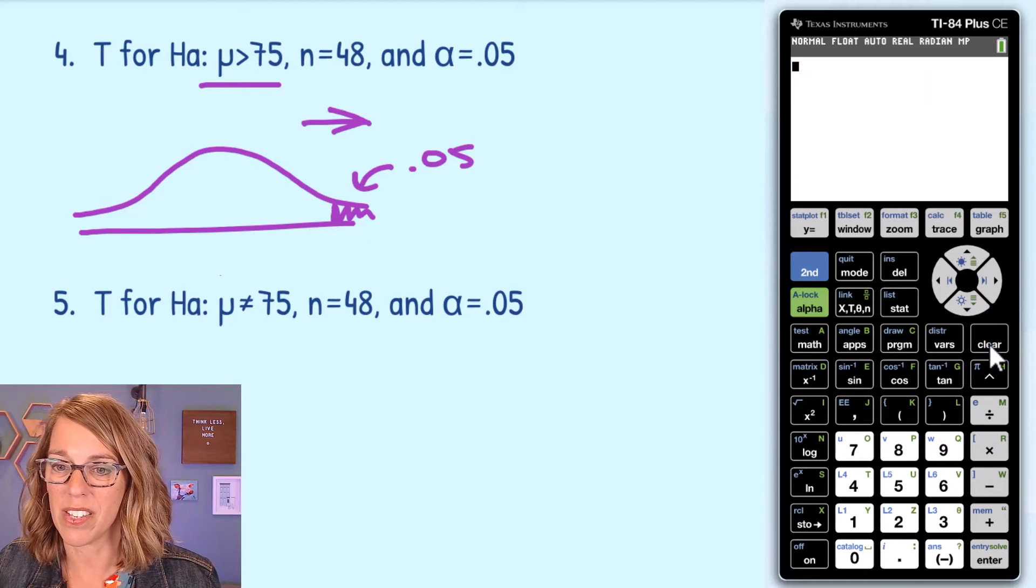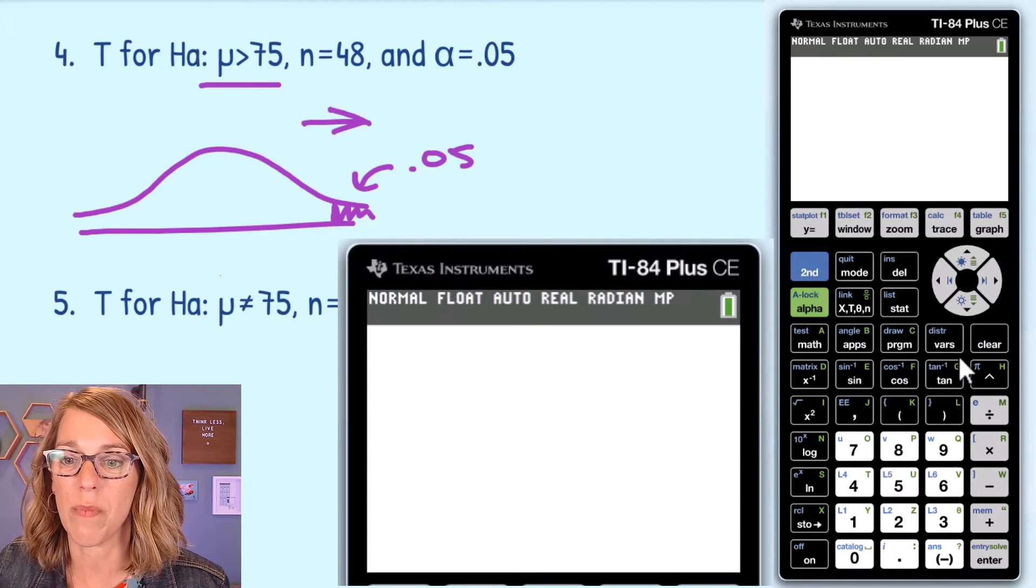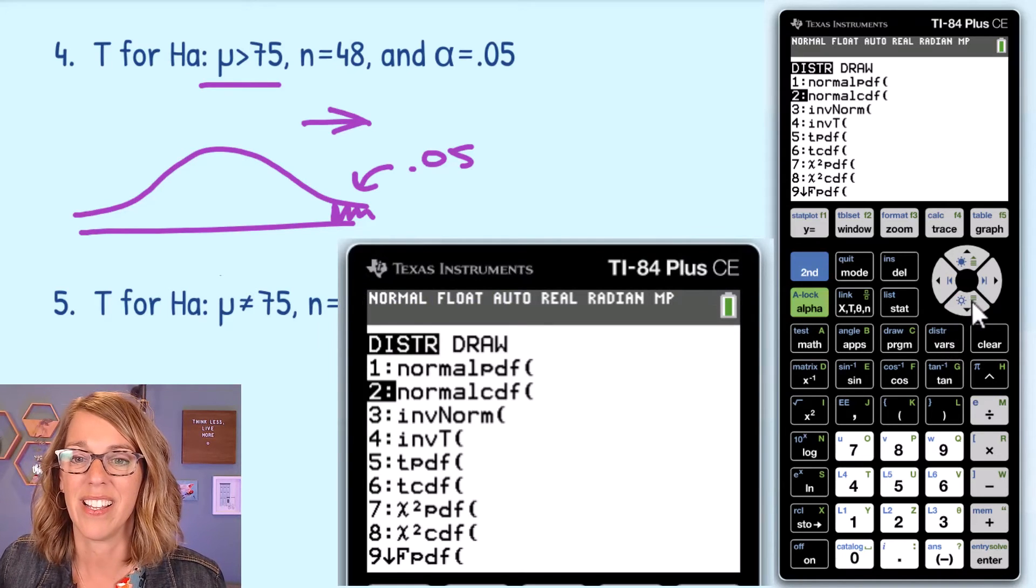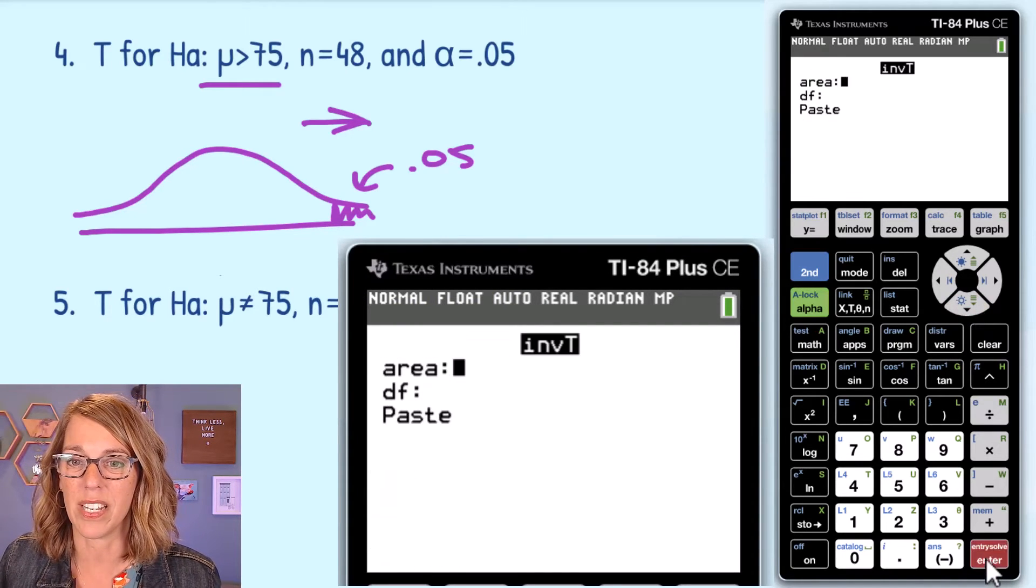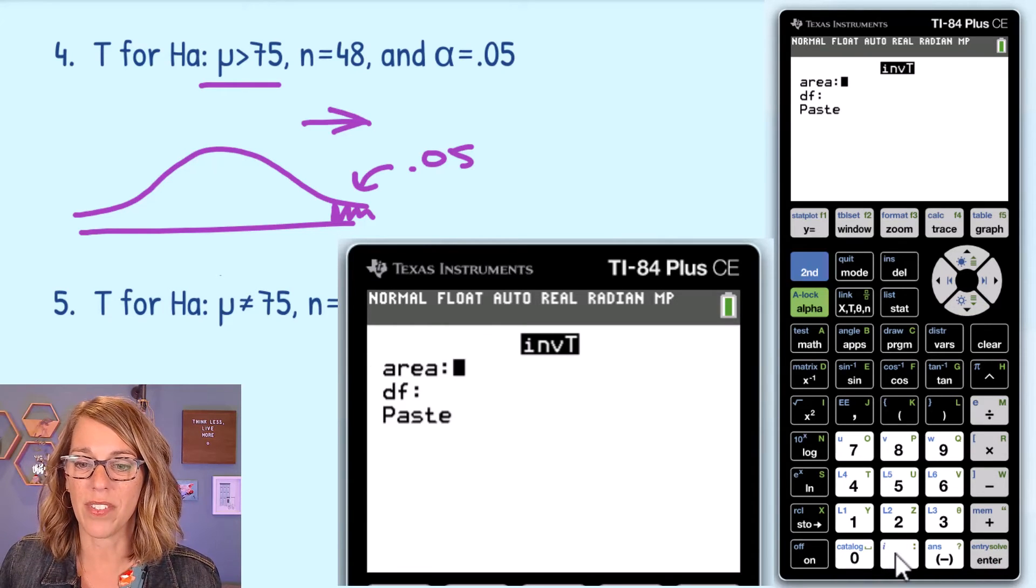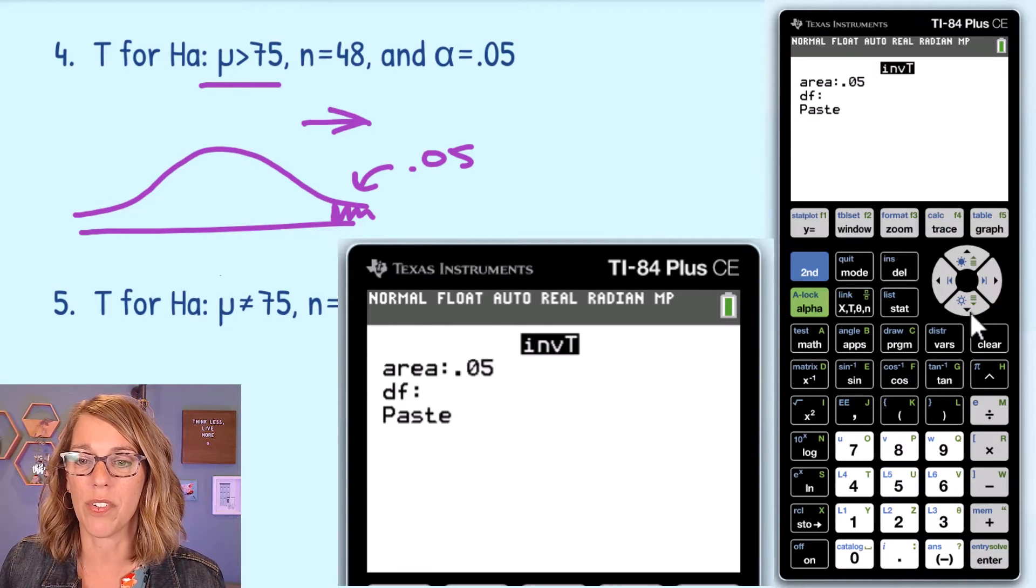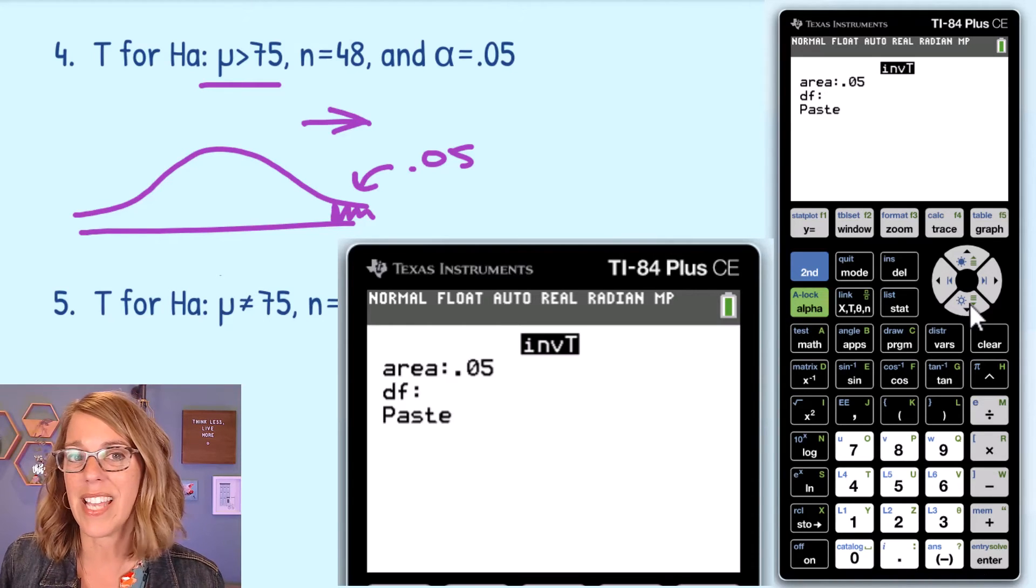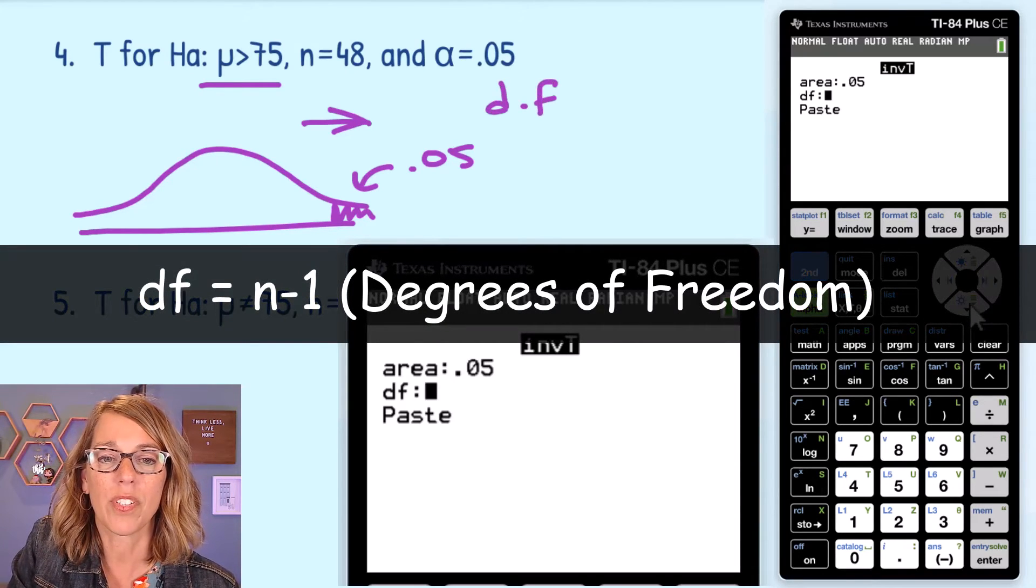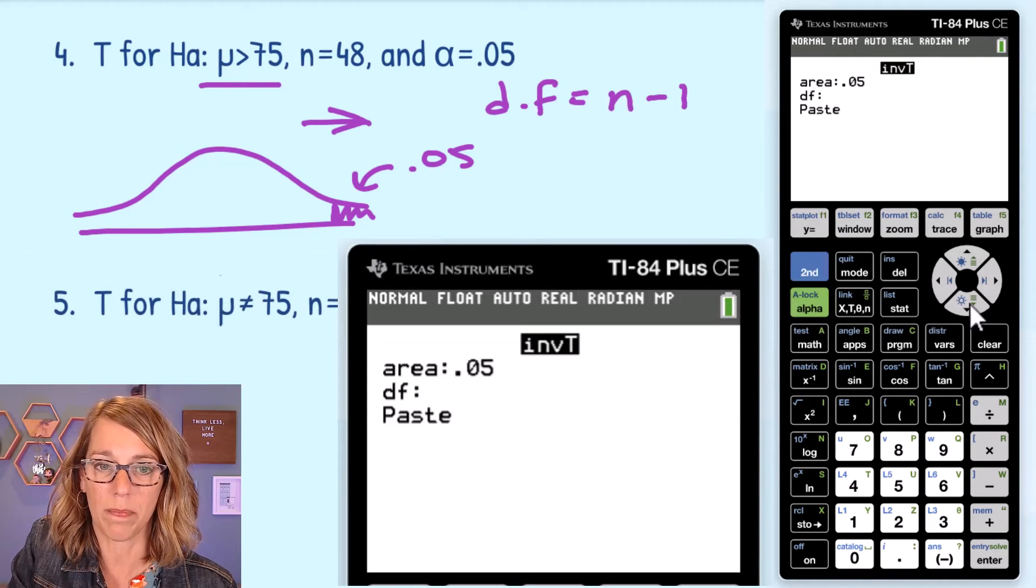If I go into my distribution menu, this time I'm looking for that inverse t. So I arrow down to inverse t, and it asks me for the area. That entire 0.05 is in a single tail. So I do want 0.05. And then it wants df, which is degrees of freedom. Now my degrees of freedom is equal to n minus 1.